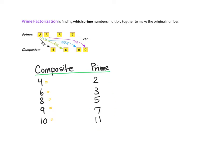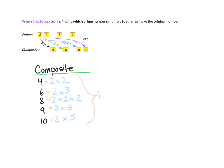Composite numbers are made up of prime factors: 2 times 2 is 4, 2 times 3 is 6, 2 times 2 times 2 is 8, 3 times 3 is 9, and 2 times 5 is 10. So each of these is called the prime factorization of its composite number. To review: a prime factorization is finding which prime numbers multiply together to make the original number.